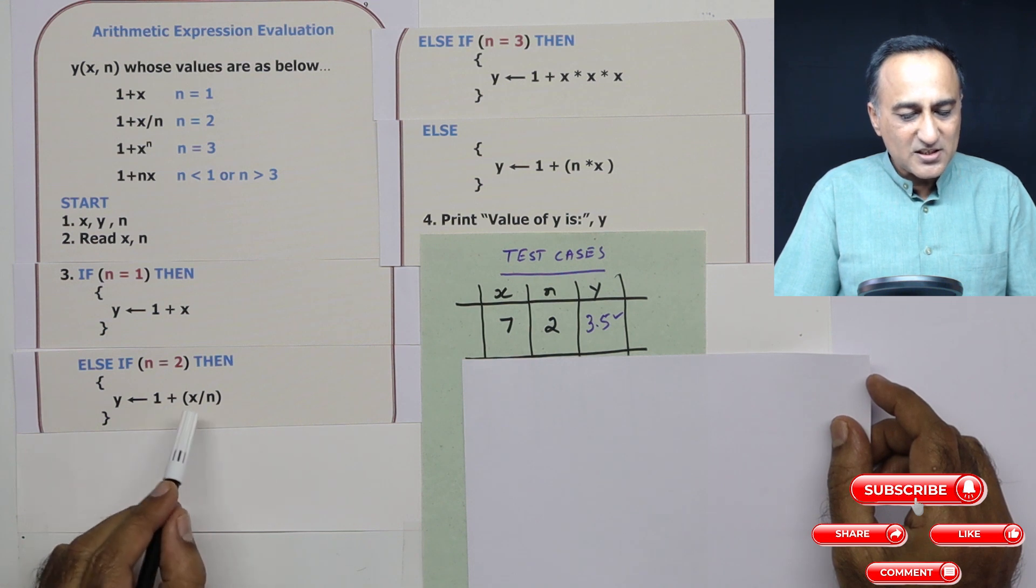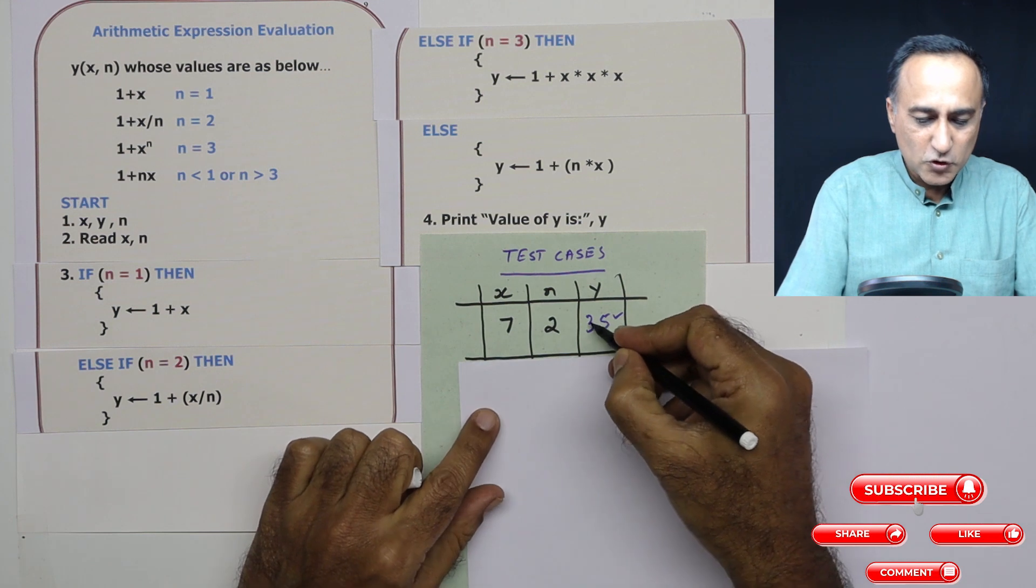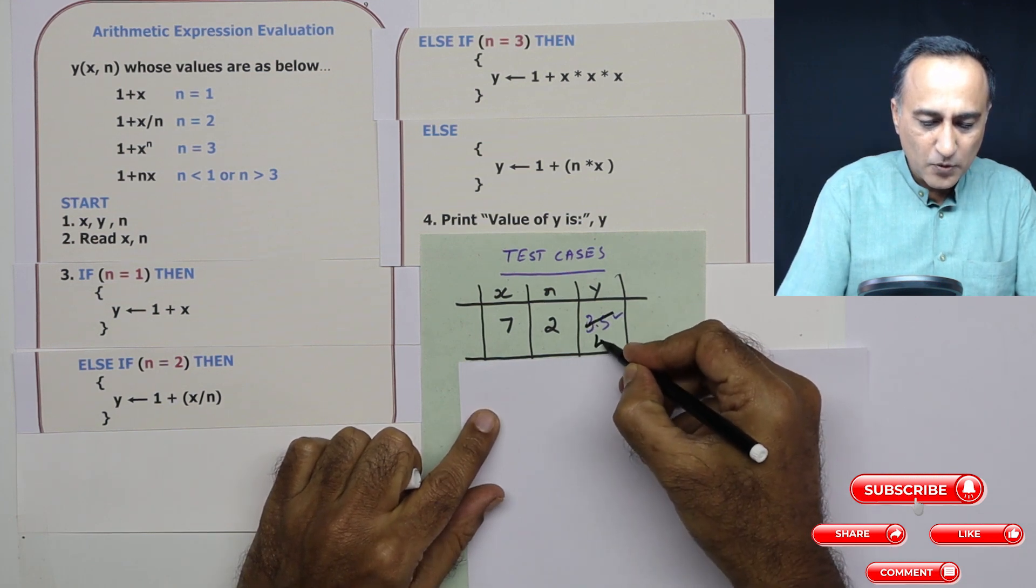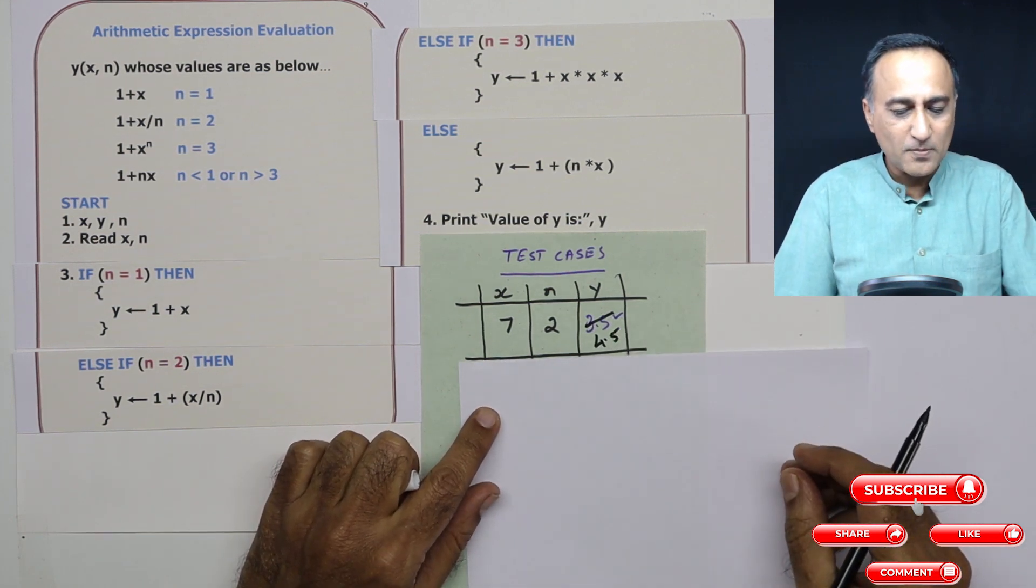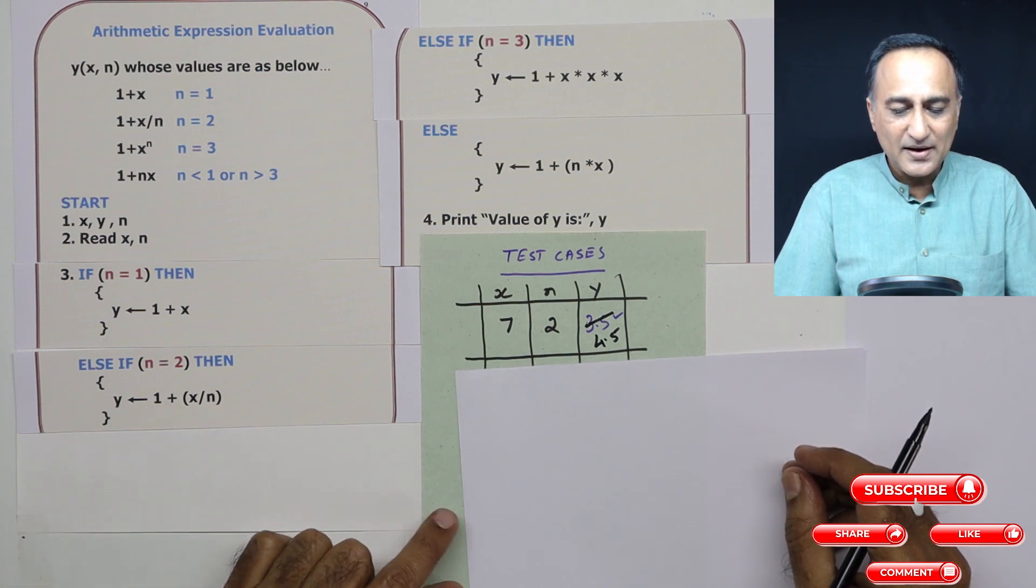This is 3.5 plus 1, so this should be 4.5. This is a correction from my side because you are going to add 1 plus x by n.